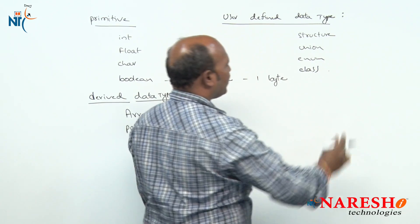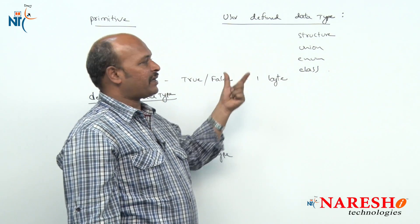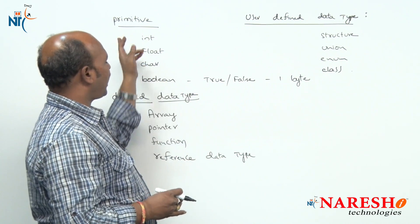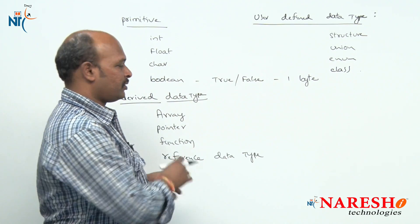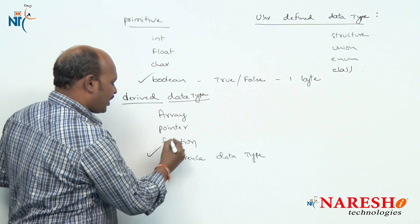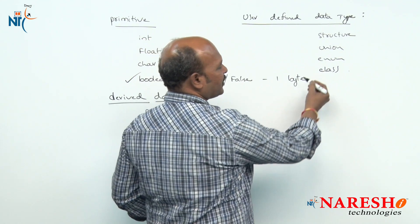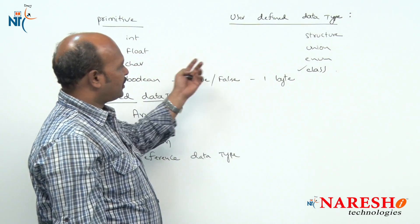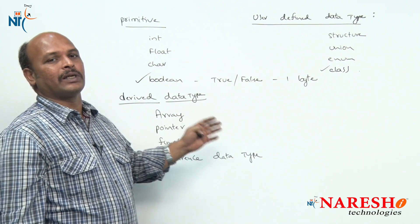So to summarize the new data types in C++: under primitive, Boolean is the new concept; under derived, reference is the new concept; and under user-defined, class is the new concept. These are the data types newly discovered in C++.